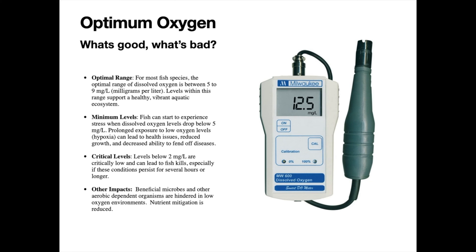When you get into the mid-range minimum level and below — around 3 to 4 milligrams per liter — the beneficial microbes used for cleaning the pond will start to be hindered. They won't work as well, so organic decomposition will be slowed or stunted. These microbes also have a natural ability to help mitigate nutrients; they are very good at utilizing nitrogen and can help with phosphorus levels too. When they are stunted in their processing, they won't do as good a job mitigating these nutrients, and the excess nutrients can lead to things like algae growth.